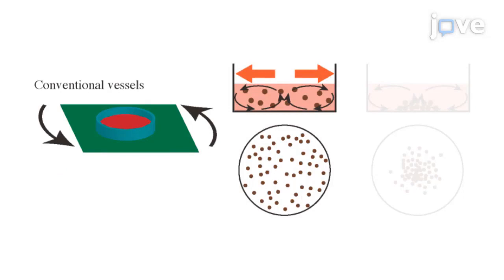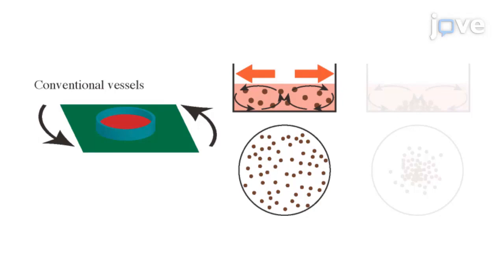In orbital-shaking culture with conventional vessels, the circular flow occurs because of the centrifugal force of the medium surface, and this medium flow transfers cells towards the center-bottom of the vessels.